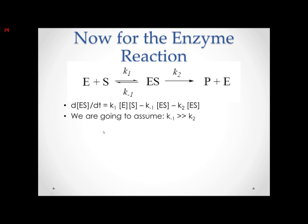We are going to assume that K minus 1 is much, much greater than K2 for this equation, which works for a lot of enzyme reactions — it's very classic. So the enzyme-substrate complex is formed but most of the time it just goes straight back to enzyme and substrate. If things are cycling E + S to ES and back repeatedly, the ES concentration isn't really changing. So the change in [ES] concentration over time is going to be approximately zero — this is an assumption we make in order to calculate it easily.